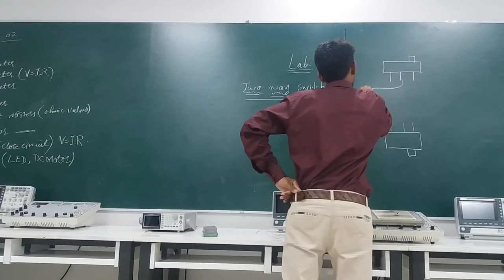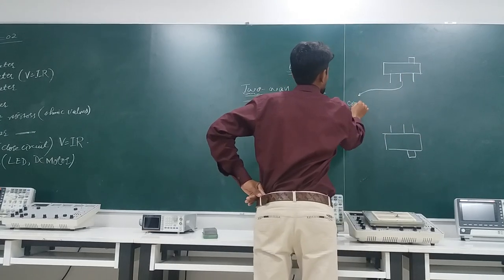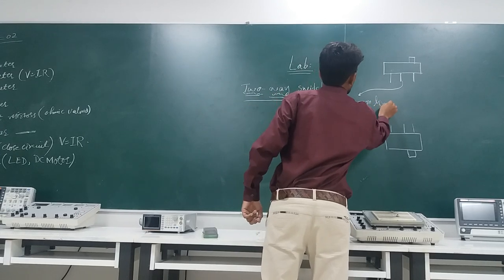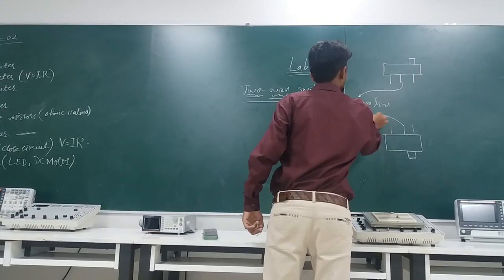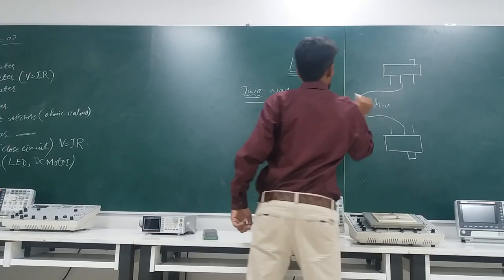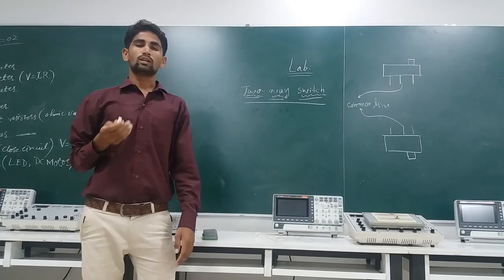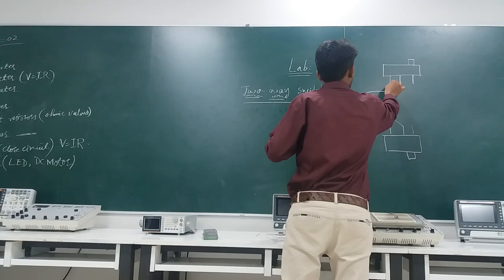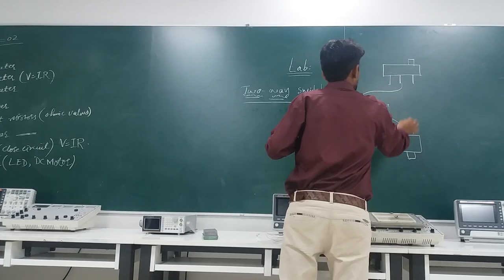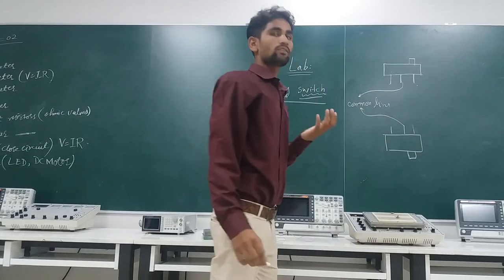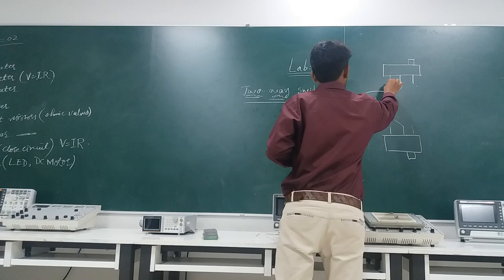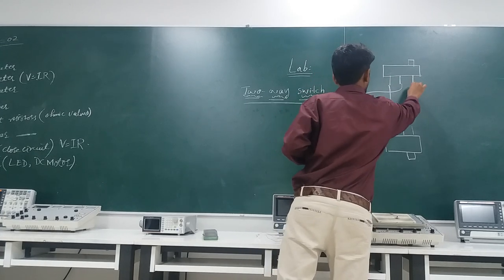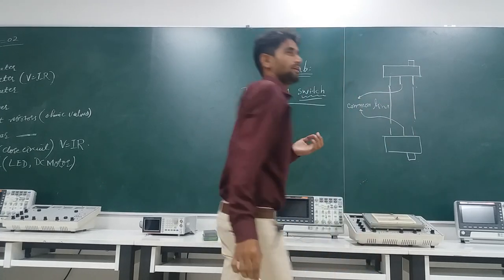The middle pin is called the common line. On the left side there is the left pin, and on the right side there is the right pin. First of all, we will connect the left of one switch to the left of the other, and the right to the right.